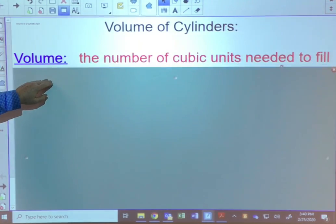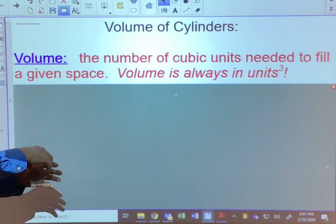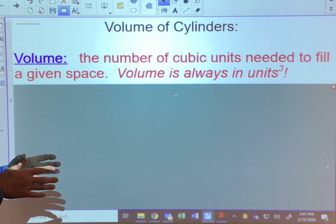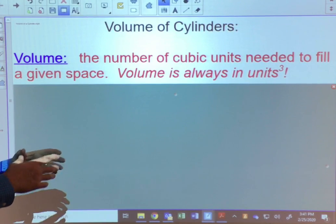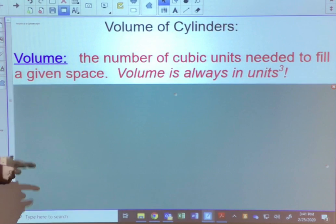Just a couple of things to remember. The volume is the number of cubic units needed to fill a given space. So it's how much will fit inside or it's also the amount of space an object takes up. And volume, as we remember from volume of rectangular prisms, is always in units cubed.